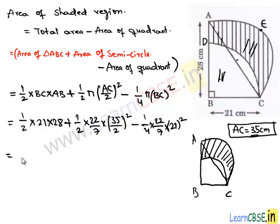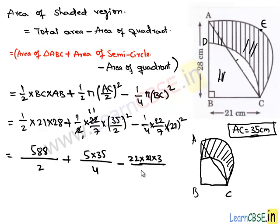By simplifying this we get the product of 21 and 28 is 588 divided by 2. Here 2 goes in 22 eleven times. Similarly 7 goes in one of the 35 five times. So 5 times 35 divided by 4 minus. Here also 7 goes in 21 three times. Therefore on numerator we have 22 times 21 times 3 divided by 4.